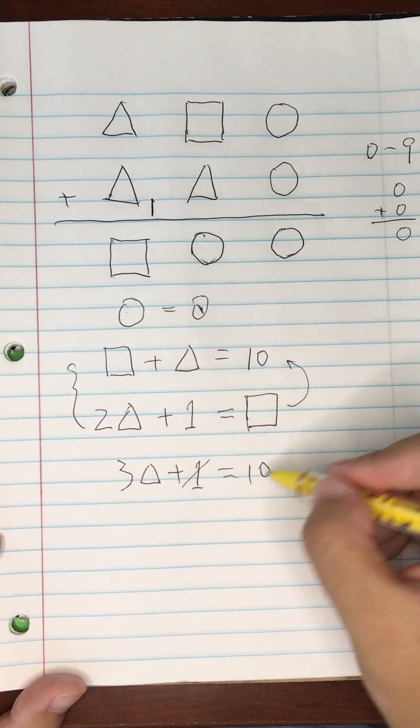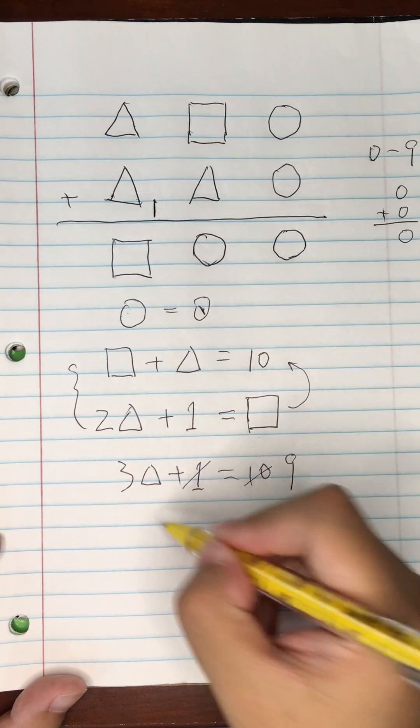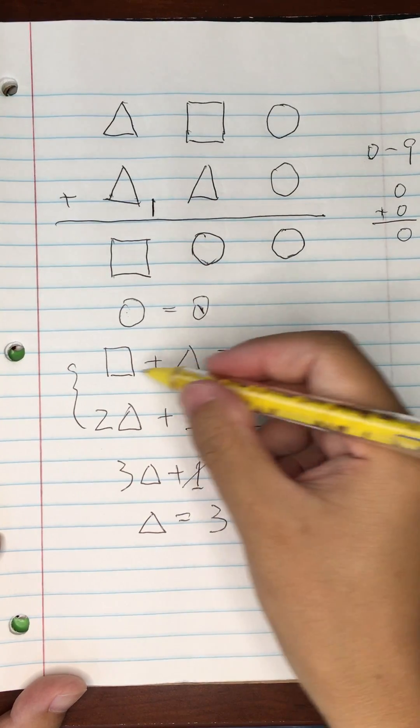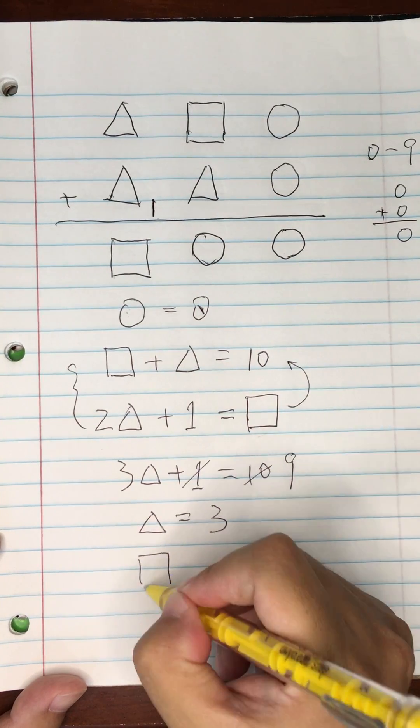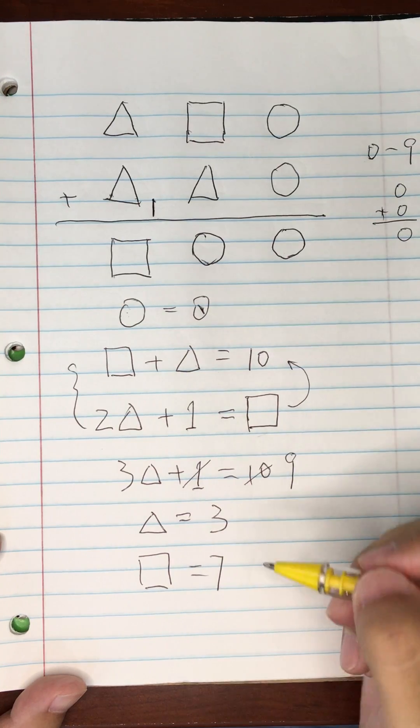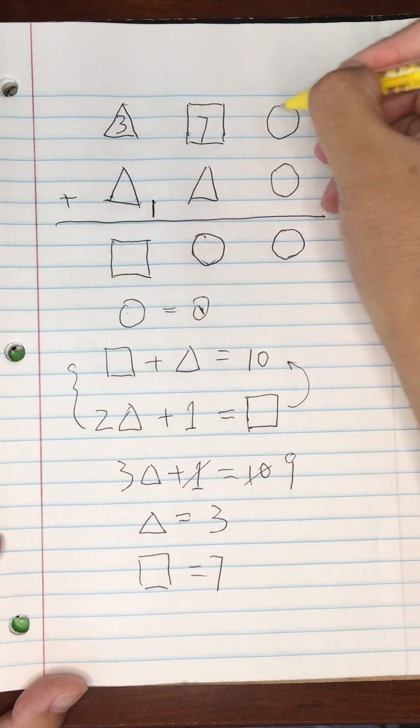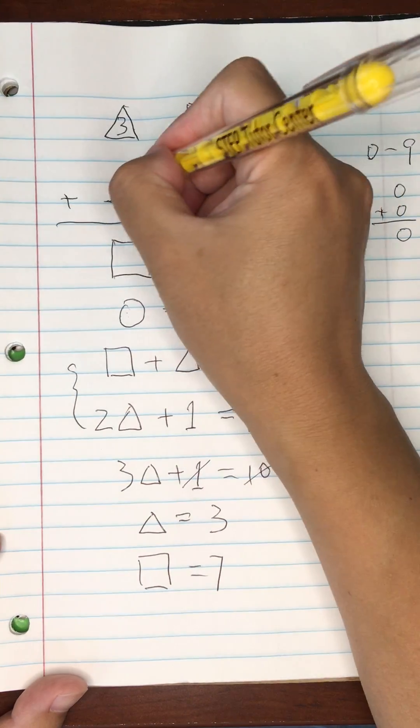This term cancels out and we end up with nine, so triangle is three. And triangle plus square equals ten, so square equals seven. So this is three, this is seven, this is zero.